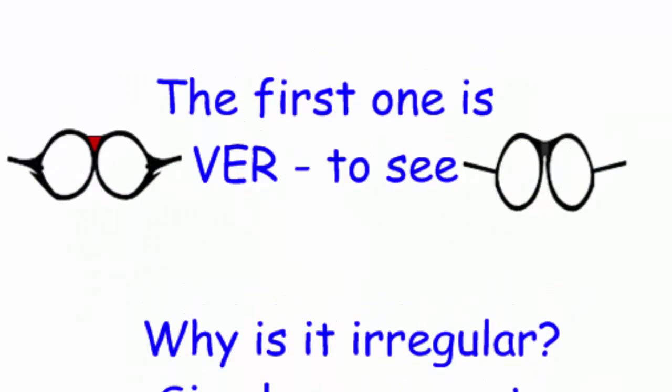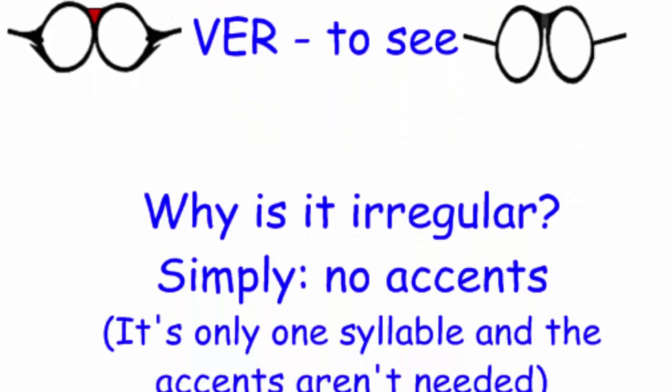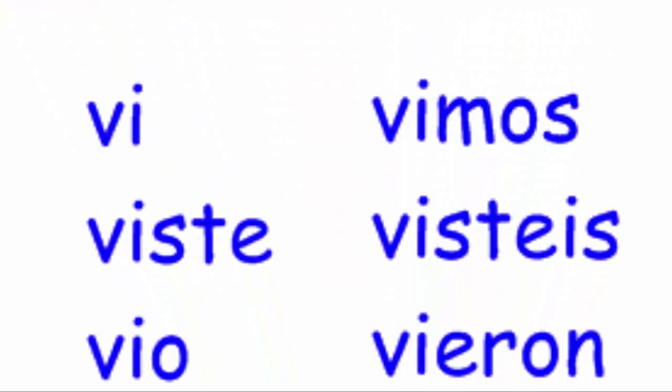Now let's go to some slightly irregular verbs — that's just a quick review of the preterite. I say slightly because some of them are not too irregular. The first one is ver — think of 'vision,' ver means to see. Why is it irregular? It's barely irregular; it only doesn't have accents because it's a little one-syllable word. So we have: vi, viste, vio, vimos, visteis, vieron. It's just like the IR endings, and there are no accents needed.